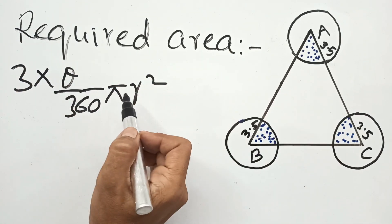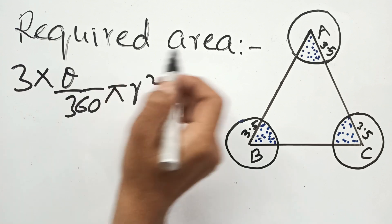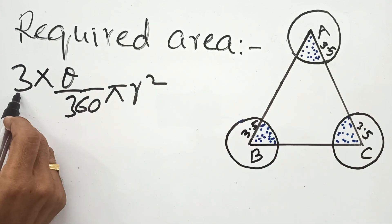Area of sector formula is theta by 360 pi R square, and there are 3 sectors, so we multiply by 3.